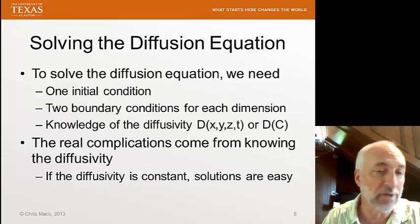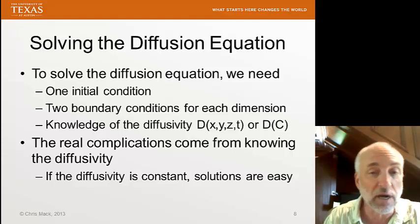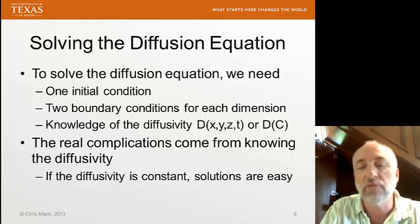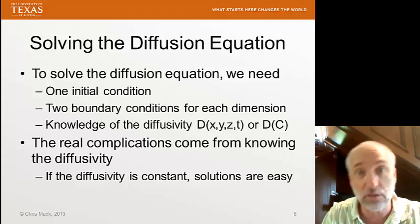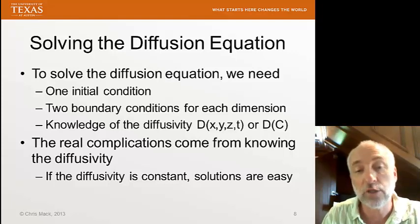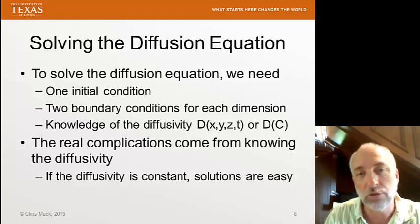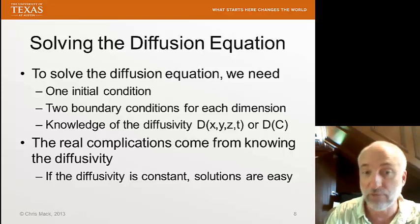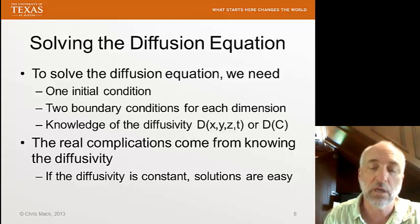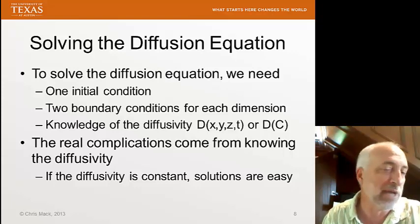This is where all the complications come from. Knowing what the diffusivity is and how it varies with position and time is what makes solving the diffusion equation difficult and complicated. If the diffusivity is constant, then our solutions become relatively easy. In the next lecture, we're going to solve the one-dimensional diffusion equation for some common initial conditions and boundary conditions, assuming constant diffusivity. Then we'll talk about what happens when the diffusivity is not constant after that.